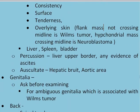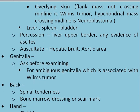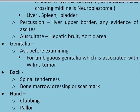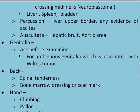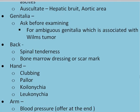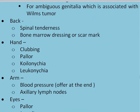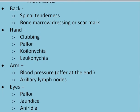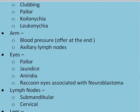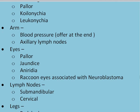Then you check for the liver, spleen, and bladder. Percussion for the liver upper border and for evidence of ascites. Auscultate for hepatic bruit and the aortic area. Then examine the genitalia, but you must ask the examiner before doing it — ambiguous genitalia is associated with Wilms tumour, and there are syndromes associated with atypical genitalia like the Denys-Drash syndrome. Then check the back for spinal tenderness, bone marrow signs, or scar marks. Examine the hands for clubbing and pallor.